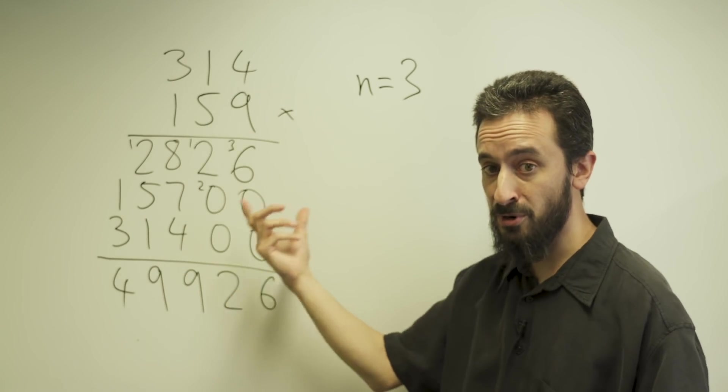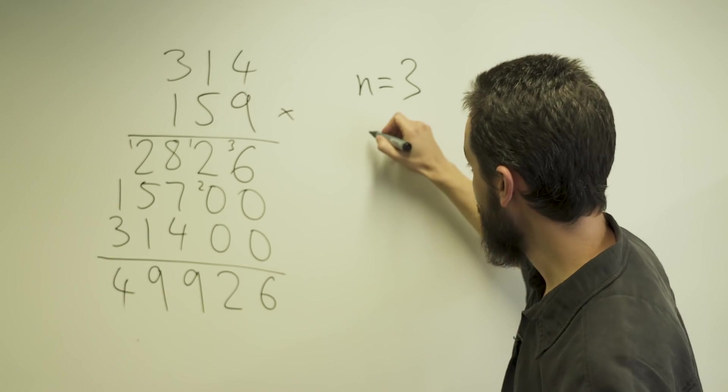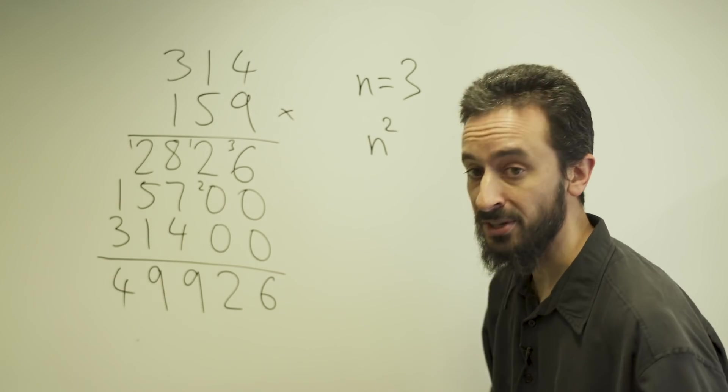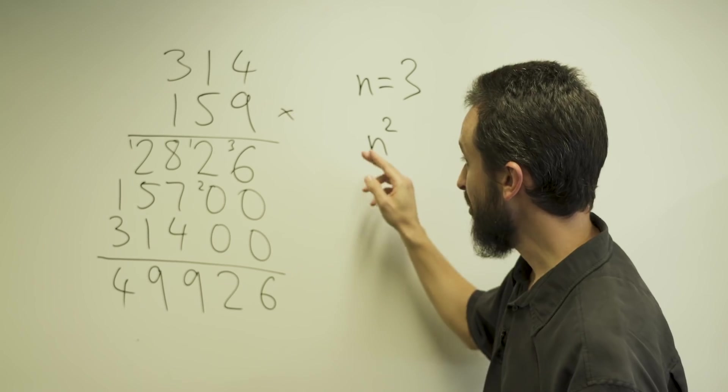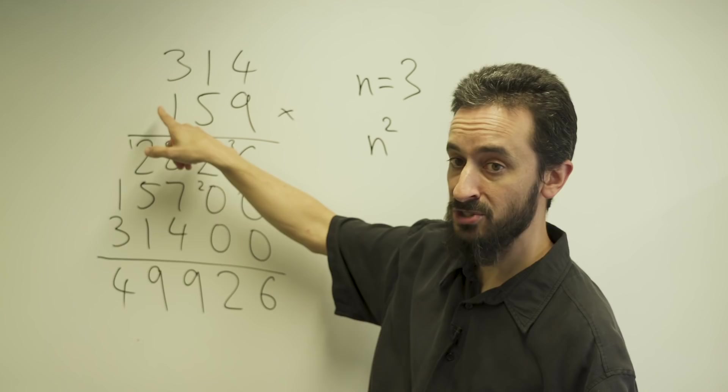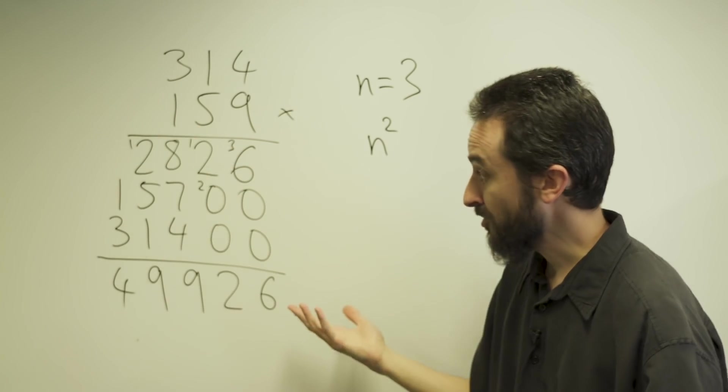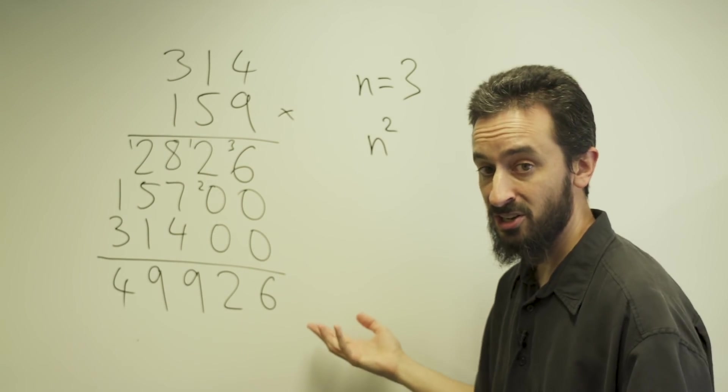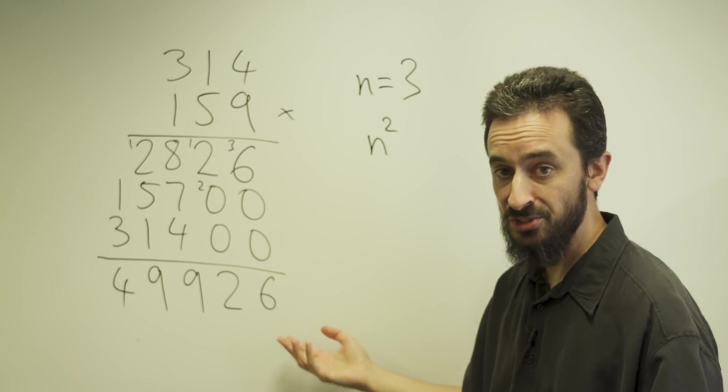The total amount of work to do this is proportional to n squared - it's n times n - because I have to multiply every one of the n digits of the first number times every one of the n digits of the second number. This was essentially the best known multiplication algorithm up until about the 1960s.